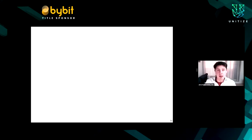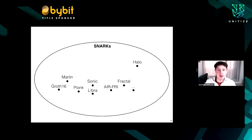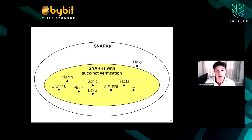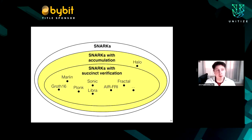In summary, for the foundations part: there are many SNARKs out there. We know from theory that SNARKs with succinct verification recurse, and in fact all SNARKs with accumulation also recurse. This includes constructions like HALO, which do not have succinct verification but do have accumulation, which allows us to recurse them. That's all I wanted to say about foundations of recursion.